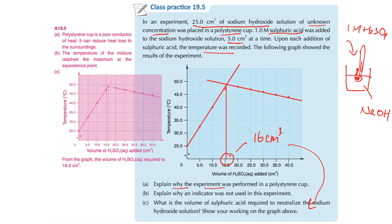For part A of the practice: why was the experiment performed in a polystyrene cup? Polystyrene cup is a poor conductor of heat, so it can reduce heat loss to the surrounding. Remember: 'poor conductor of heat' — heat is the key word. Do we need an indicator in this method? No, because we are measuring the temperature. The maximum temperature reached is the equivalence point.